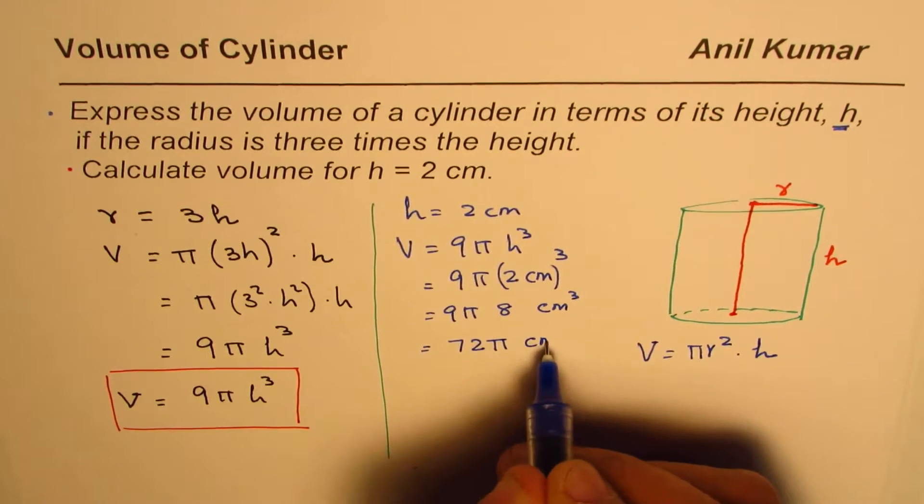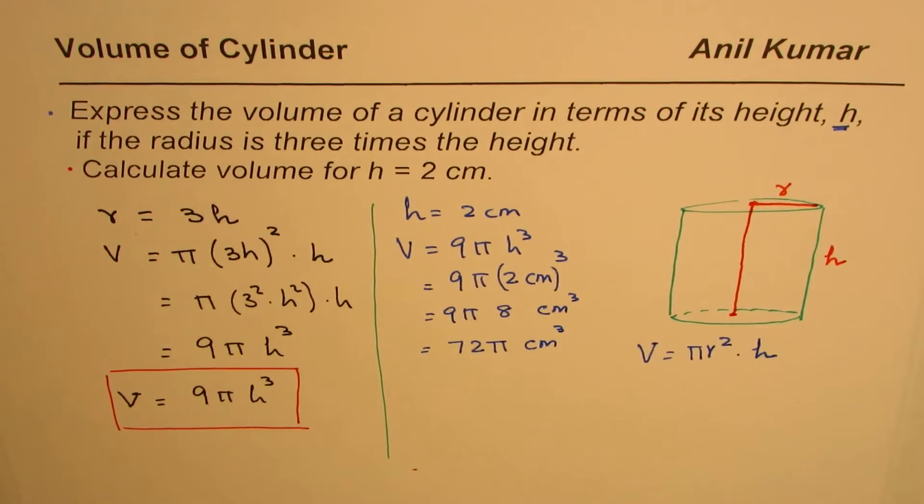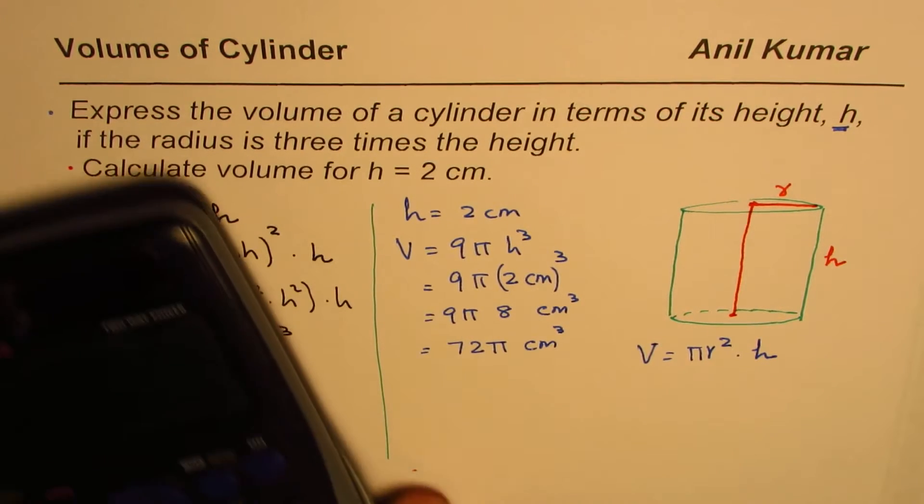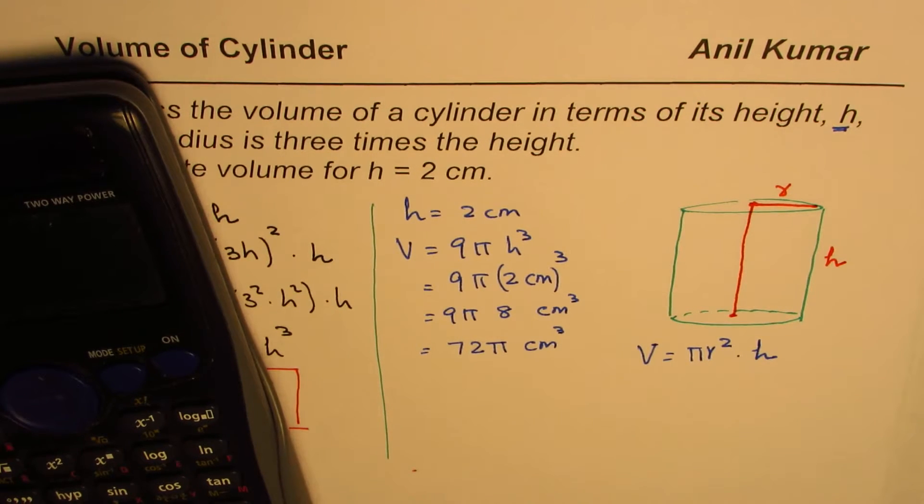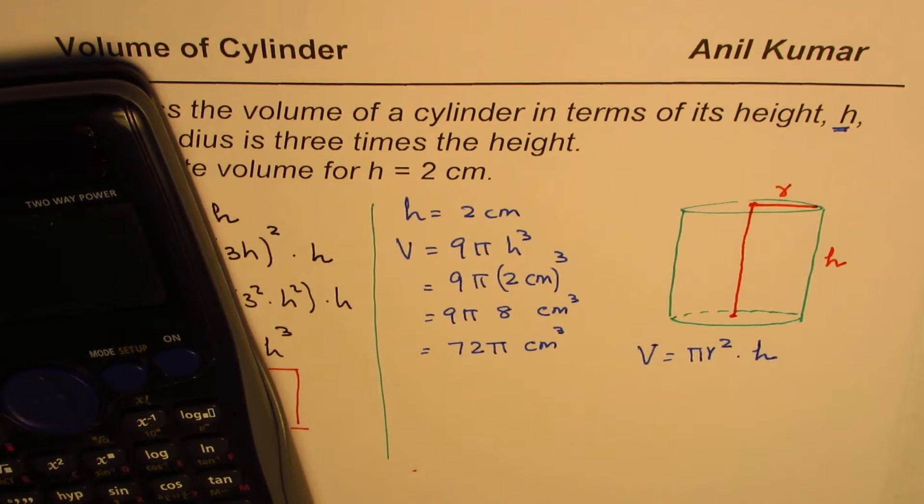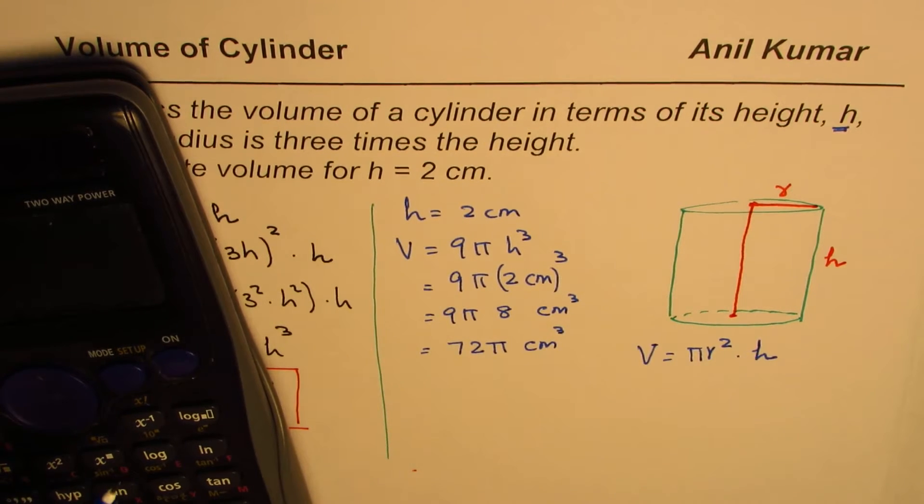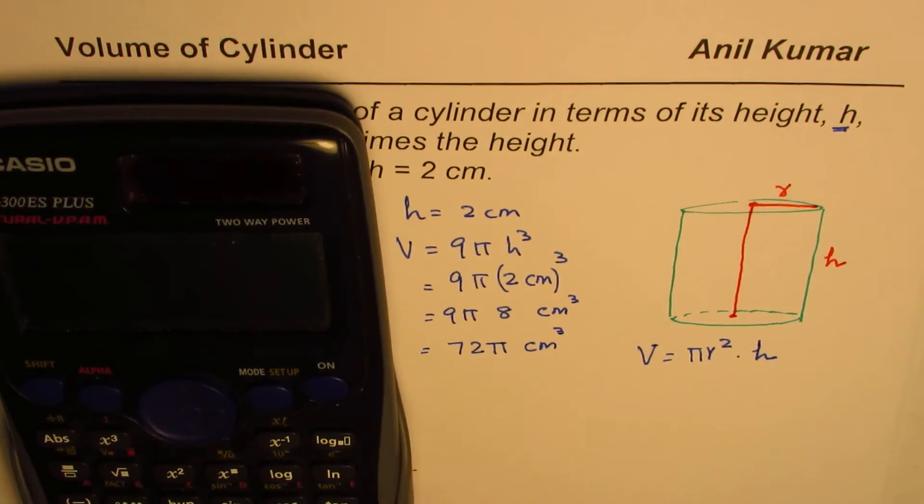You could write this as 72π cm³, or you could use a calculator—use the value of π. So we'll do 72 times π, which is...write this...72π equals...and write it in decimal.